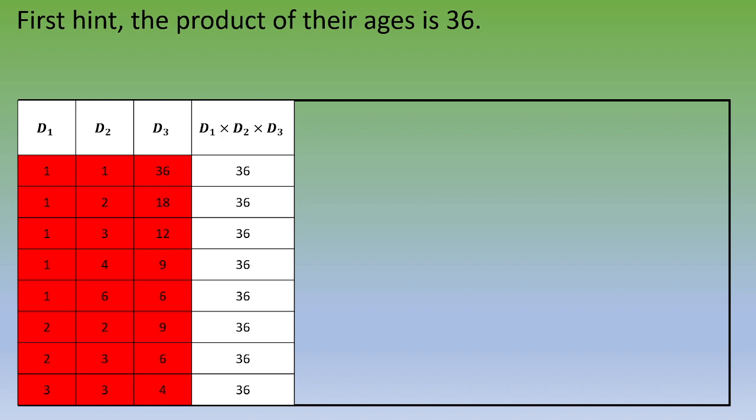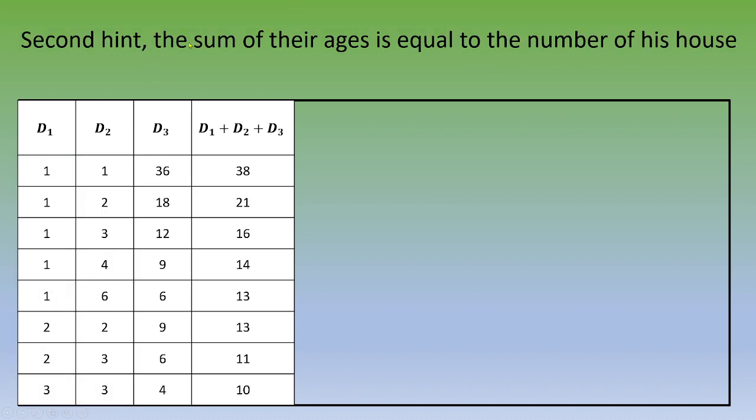Let's see the second sentence. The sum is equal to the number of his house. Well, we don't know the number of his house. Let's do exactly the same. Let's calculate D1 plus D2 plus D3.